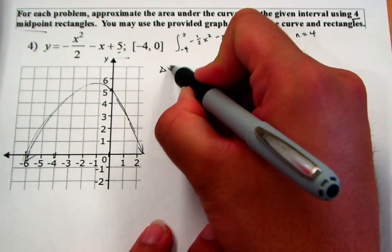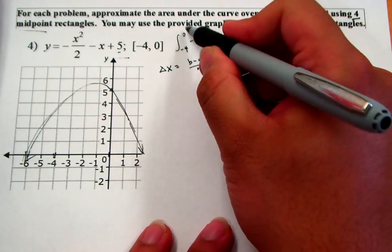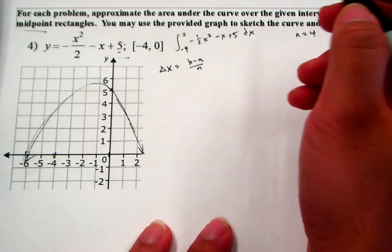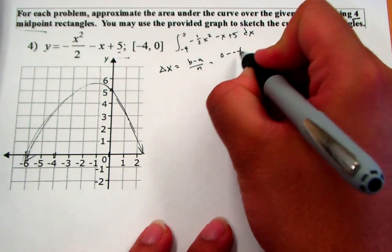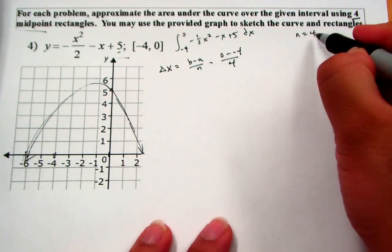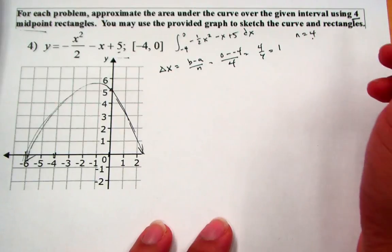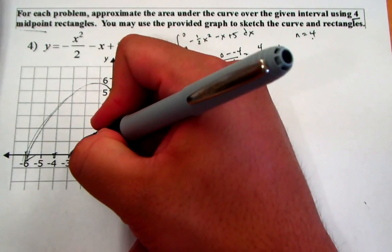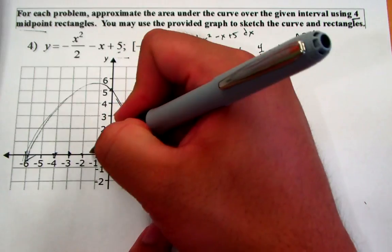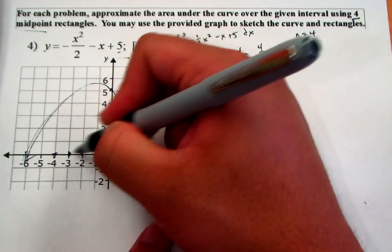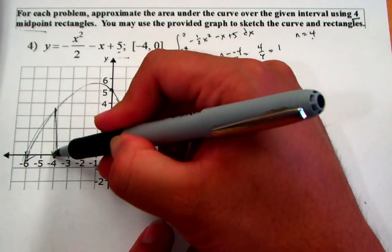Let's find our width, delta x, which equals b minus a over n — the size of our interval divided by the number of slices. That would be 0 minus negative 4 over 4, which is 4 over 4, equal to 1. So from negative 4 to negative 3 is one interval, then negative 3 to negative 2, negative 2 to negative 1, and negative 1 to 0 — the four natural intervals you'd expect in this region.